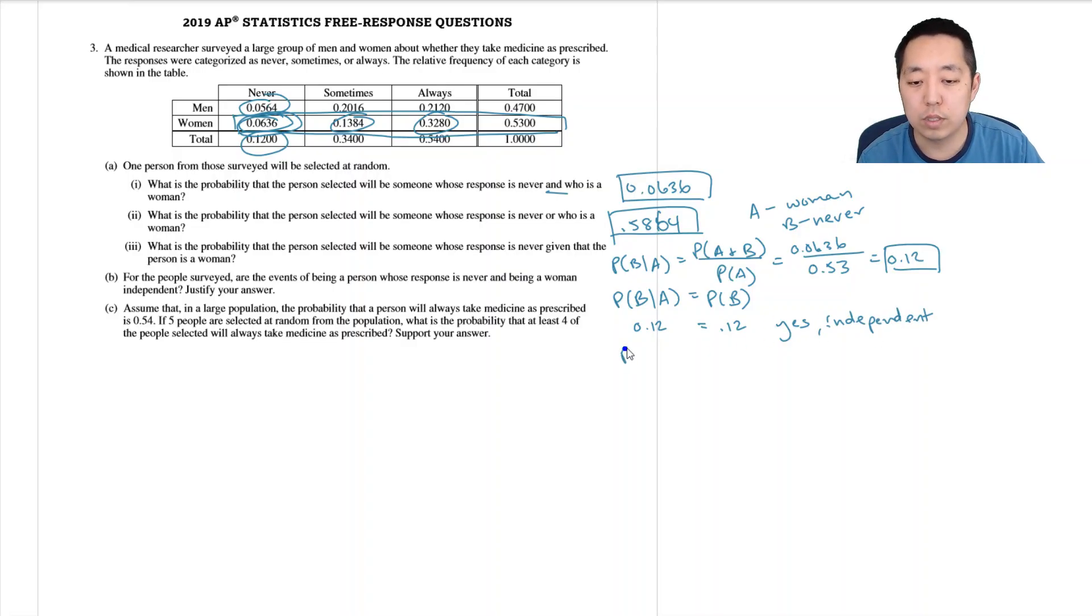You could also use this relationship: the probability of B and A equals the probability of B times the probability of A for independence. That check would work and that equality will hold.